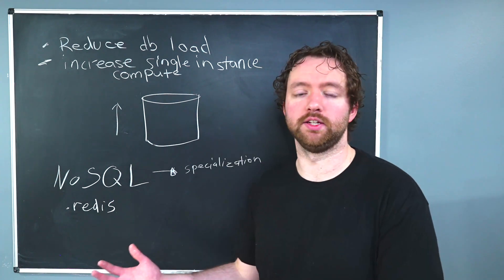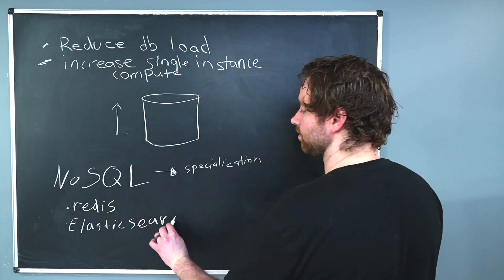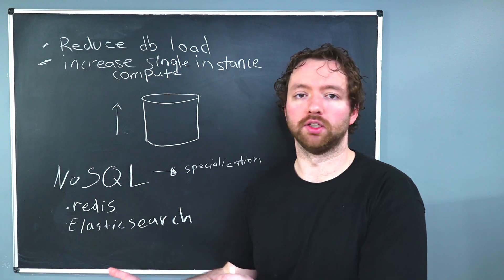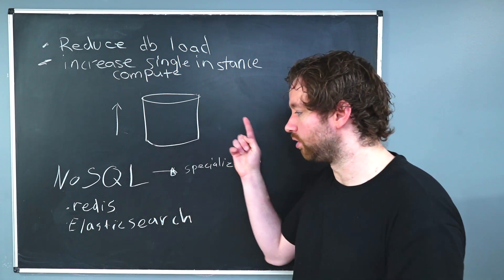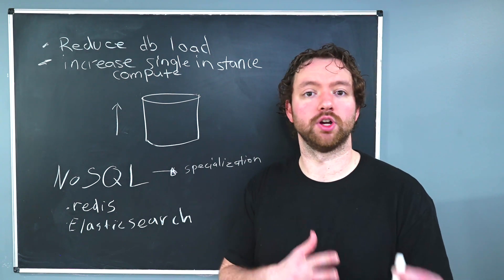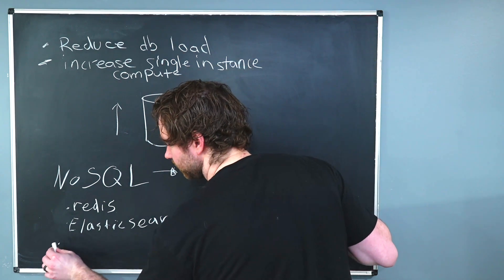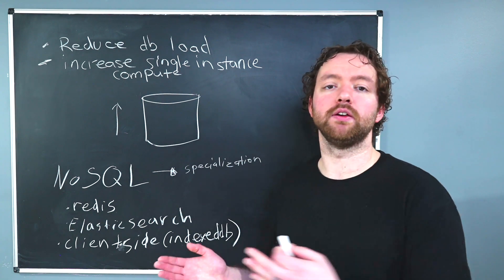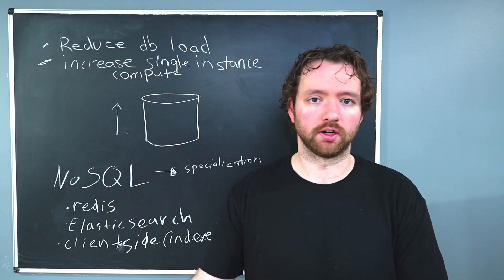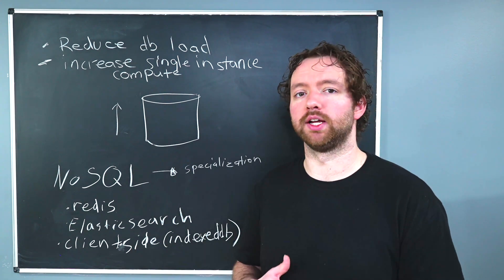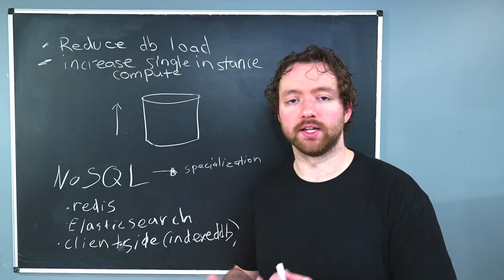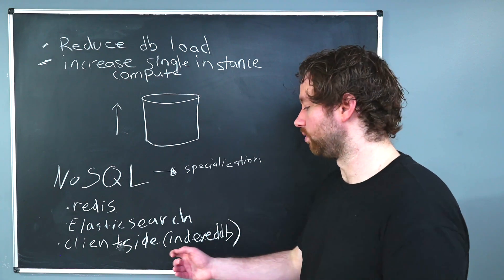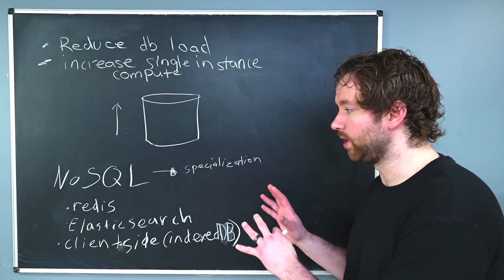Redis can be used for any type of data that doesn't need to be preserved forever. Another example is Elasticsearch — a database specialized in searching. There might be scenarios where you're doing a lot of searching and don't want to throw that load on your main database, so you put the relevant data into Elasticsearch and use it just for that purpose. There are also client-side databases such as IndexedDB in the web browser, used for data storage that doesn't need to be stored on the server — things like local game data or settings that don't require permanent storage.